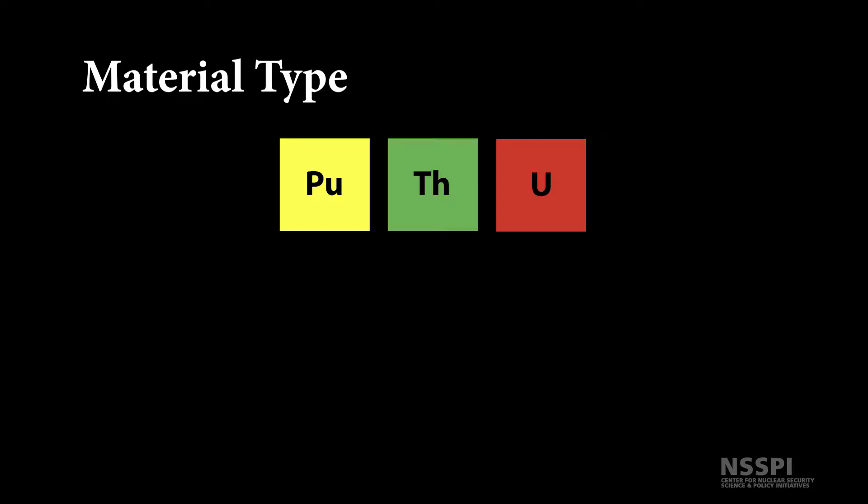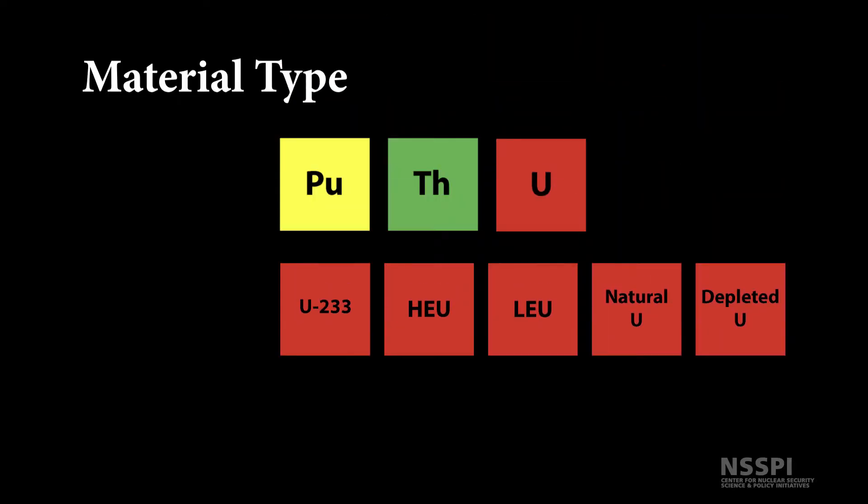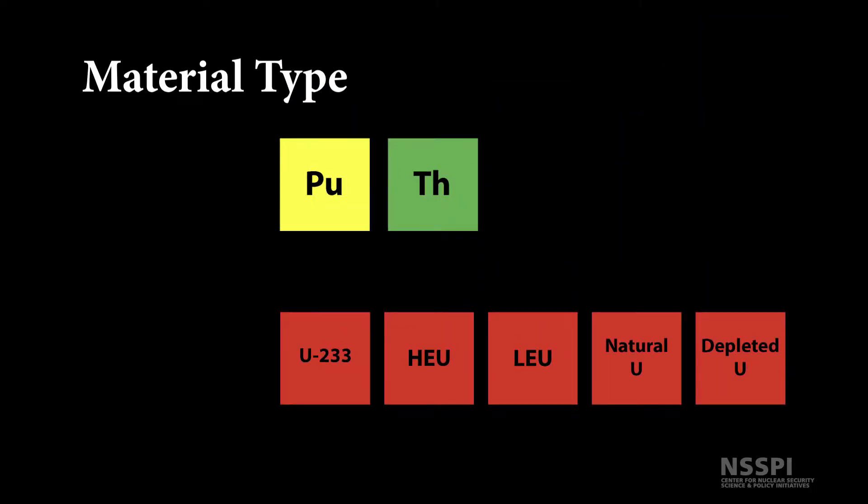The nuclear material types are plutonium, thorium, and the different forms of uranium: uranium-233, highly enriched uranium or HEU, depleted uranium, natural uranium, and low enriched uranium or LEU.